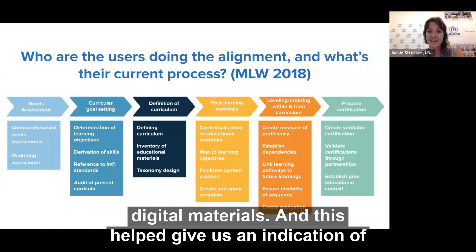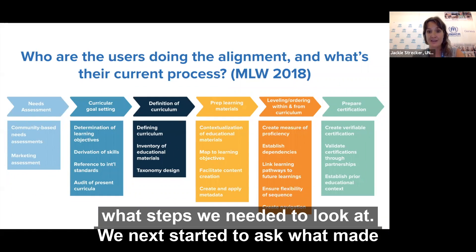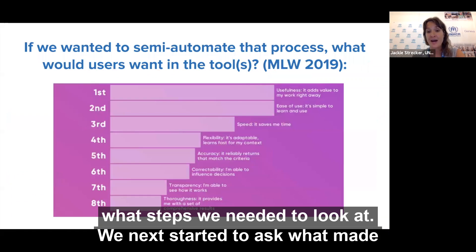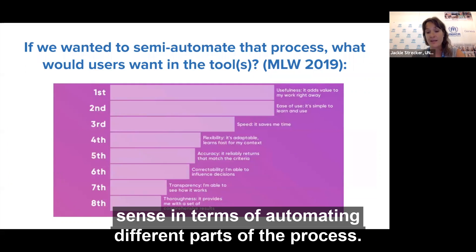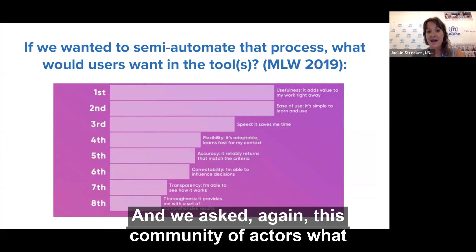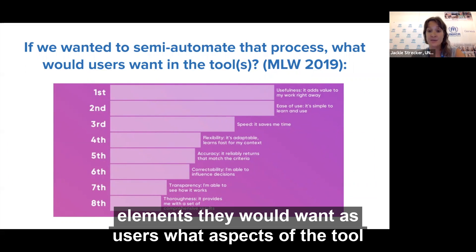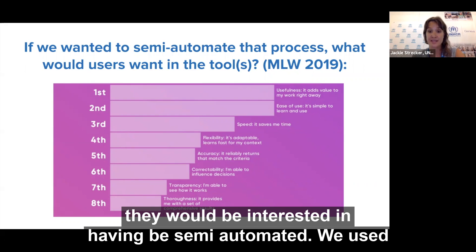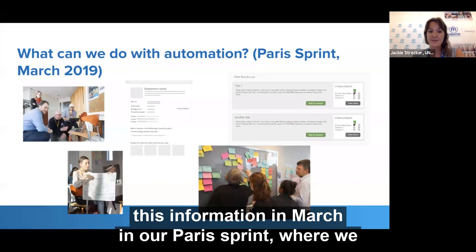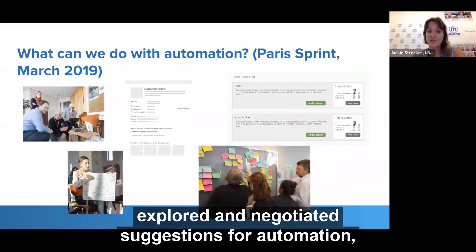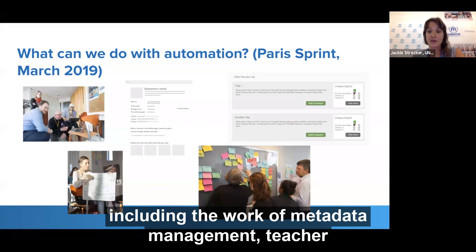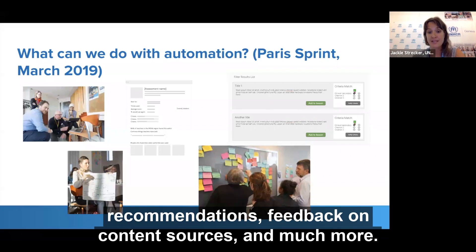This helped give us an indication of what steps we needed to look at. We next started to ask what made sense in terms of automating different parts of the process, and asked this community of actors what elements they would want as users — what aspects of the tool they would be interested in having semi-automated. We used this information in our Paris Sprint, where we explored and negotiated suggestions for automation, including the work of metadata management, teacher recommendations, feedback on content sources, and much more.